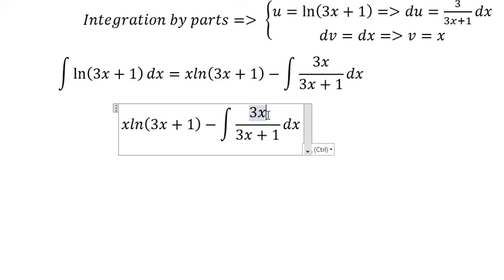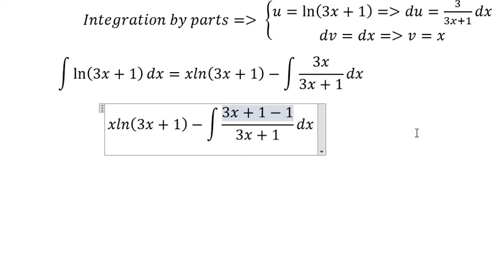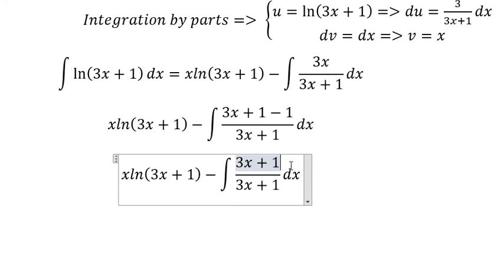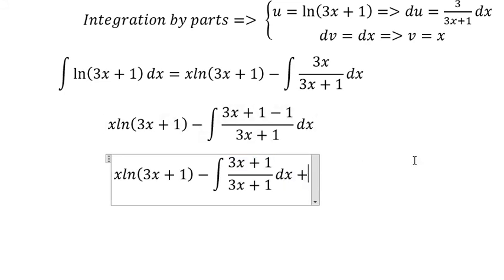We add and subtract 1, then separate this into two integrals. Because we have negative and negative, they become positive.